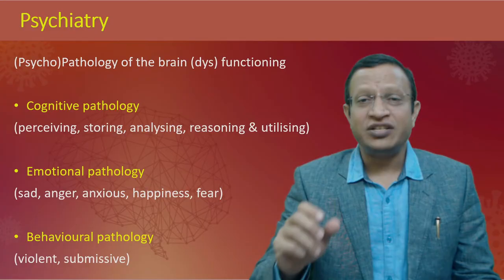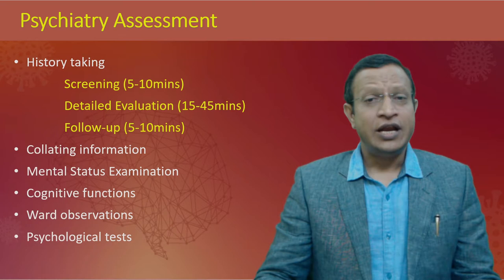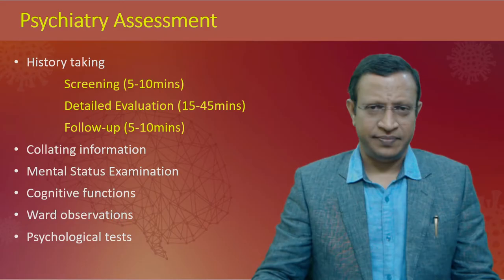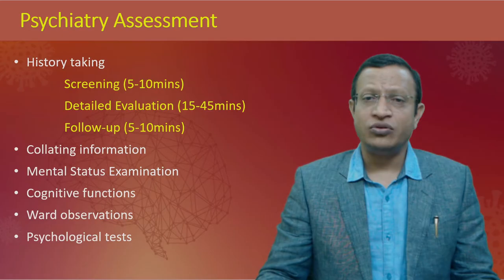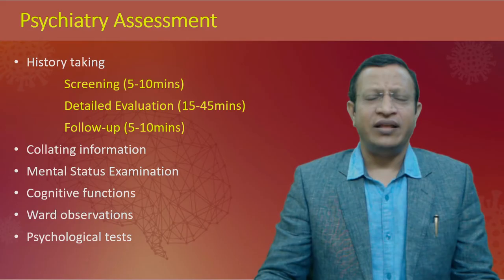There are different types of psychiatric assessment: screening, detailed evaluation, and follow-up assessment. For screening, done at first contact, it is usually 5 to 10 minutes — basically to get a provisional diagnosis and determine whether the person requires immediate admission, ICU care, or OPD treatment. Detailed evaluation is done to determine diagnosis, management, and rehabilitation planning.